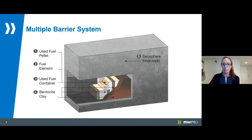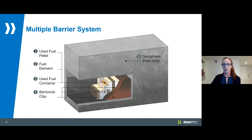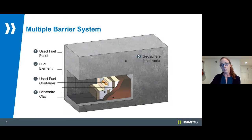This is what an underground emplacement room looks like in the repository. This figure represents each element of our multiple barrier system — a series of five engineered and natural barriers that work together to protect people and the environment. Each barrier can be described independently, but they work together in harmony to provide safety. The first barrier is the used fuel pellet itself, which is uranium dioxide powder furnace-baked into a hard ceramic. Ceramics are one of the most durable engineered materials and they do not readily dissolve in water, which is the only way for radioactive material to escape from the fuel pellet.